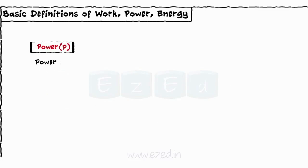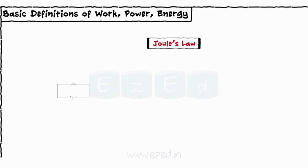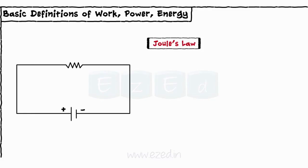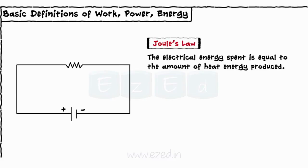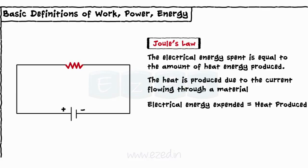Power is defined as the work done per unit time: P equals W by T. The SI unit of power is joules per second. Joule's law states that the electrical energy spent is equal to the amount of heat energy produced. The heat is produced due to the current flowing through a material. Electrical energy expended equals heat produced. Thus, V into I into T equals I squared R into T equals V squared upon R into T.